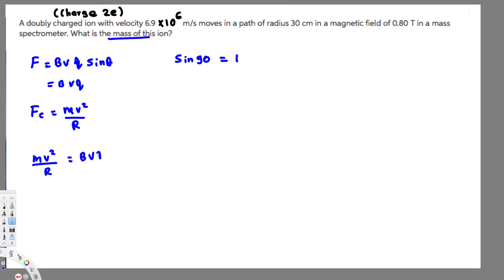We have mv²/r = Bvq. Let's separate the mass.